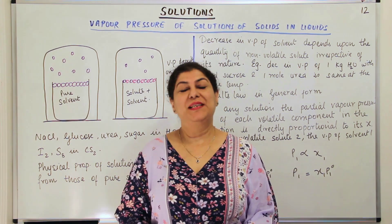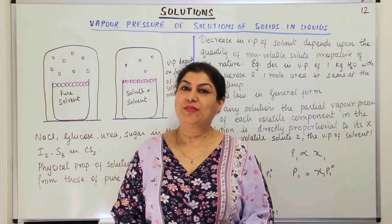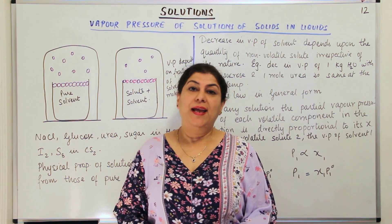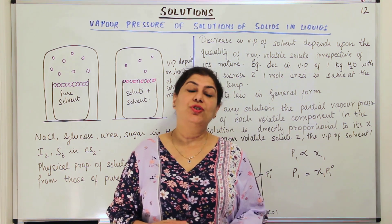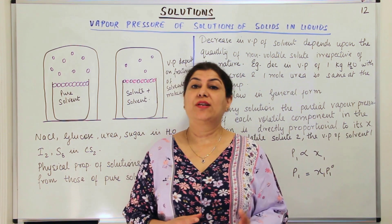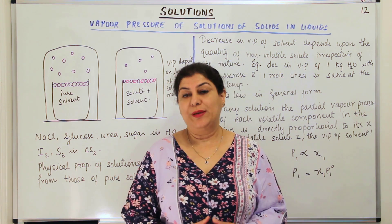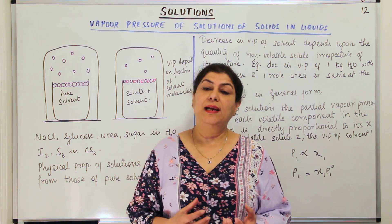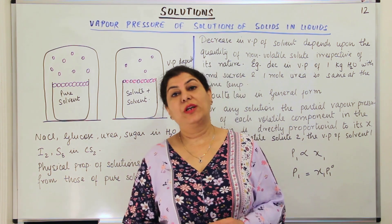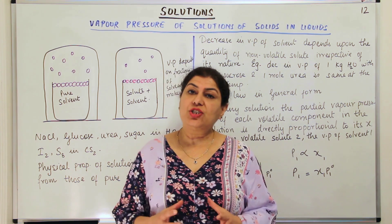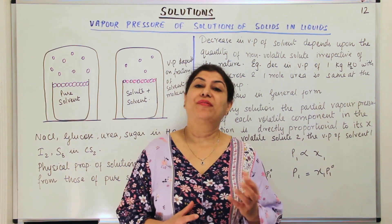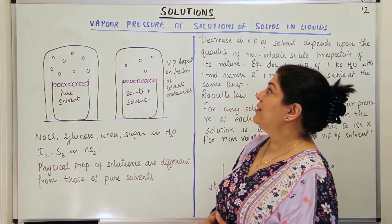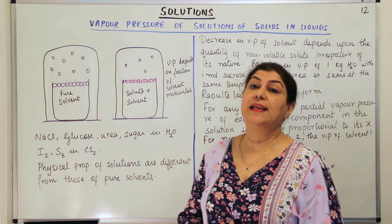Hello, I'm Seema and welcome to part 12 of the chapter Solutions. We have been studying about liquid solutions and I discussed Raoult's law in relation to volatile solutes and solvents, or mixtures of volatile liquids. Sometimes you have a solvent that is volatile and the solute may be a solid and obviously it is non-volatile. In such a condition, how is the vapor pressure affected? That is what we are going to study in this video — vapor pressure of solutions of solids in liquids.